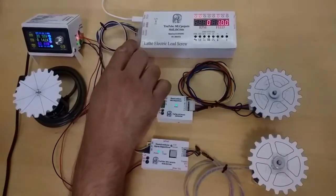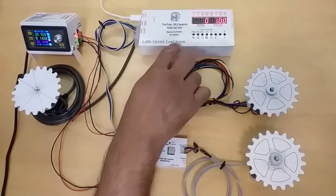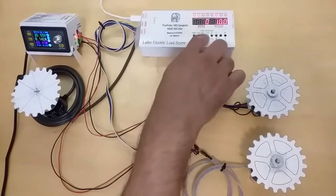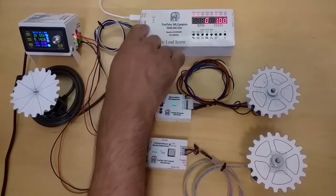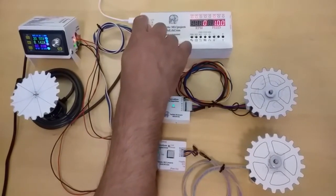This is my lathe electronic lead screw, in short ALS, with polyester scratch-resistant top layer. In the multicolored layout, there is a micro-USB power 5V 2A.